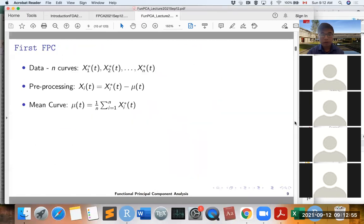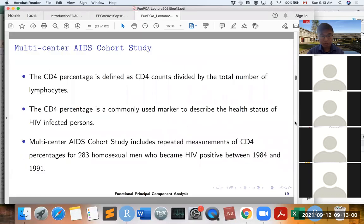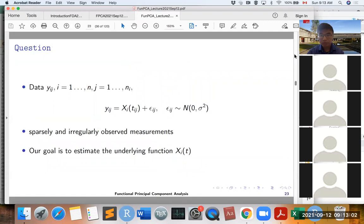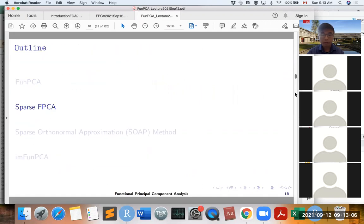So this is what we learned before. Now let's look at how we do the LPCA on the sparse functional data.